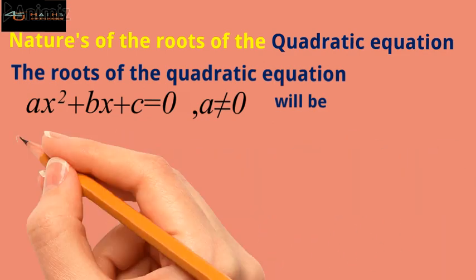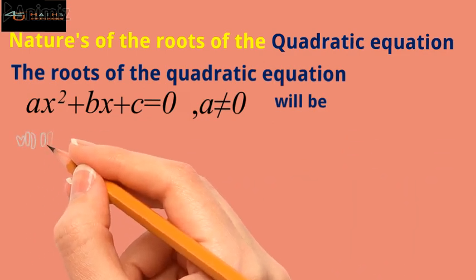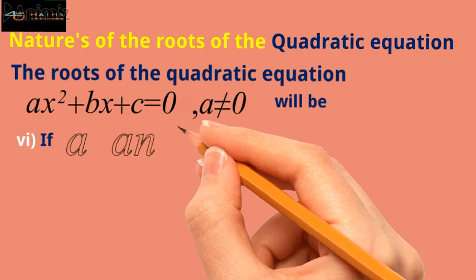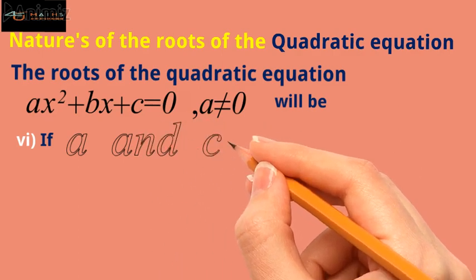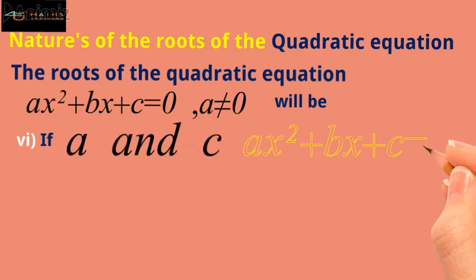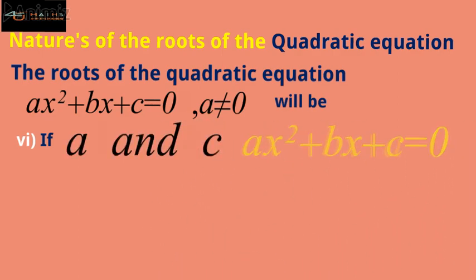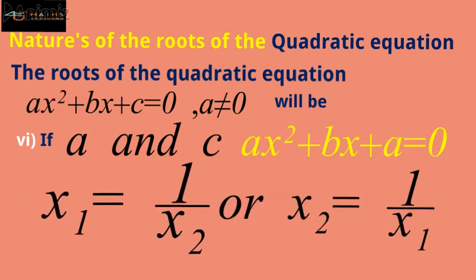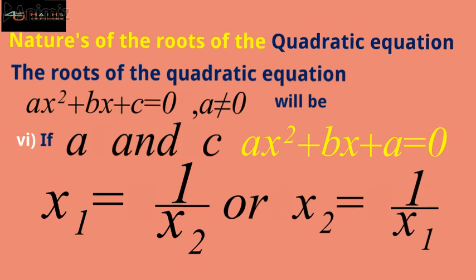Case six — if a and c in the quadratic equation are equal, then the roots will be reciprocals of each other; that is, they will be the multiplicative inverses of each other.